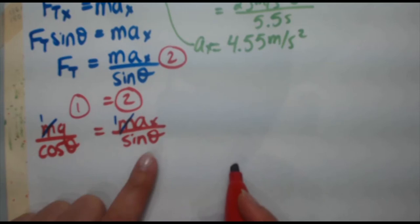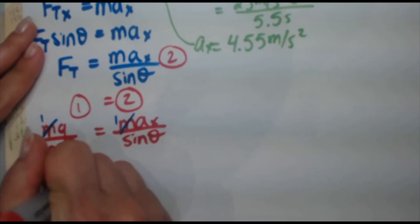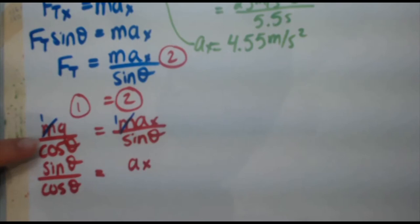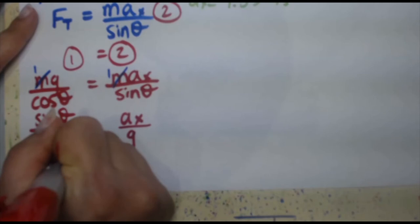Now, here is where we realize we gotta isolate theta. So we gotta get all the thetas on one side. So I'm gonna bring the sine theta over to the top, because I recognize sine theta over cos theta as another expression. The cos theta over sine theta doesn't really help us in this case. So a x, now bring the g down to the denominator on the right, a x over g. If you remember from trigonometry class, sine theta over cos theta is tangent theta.